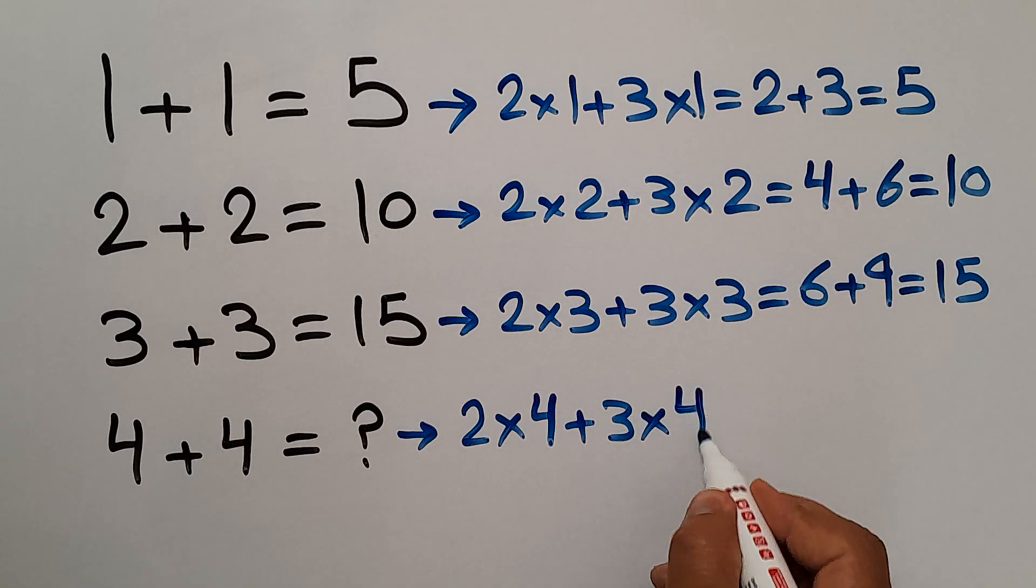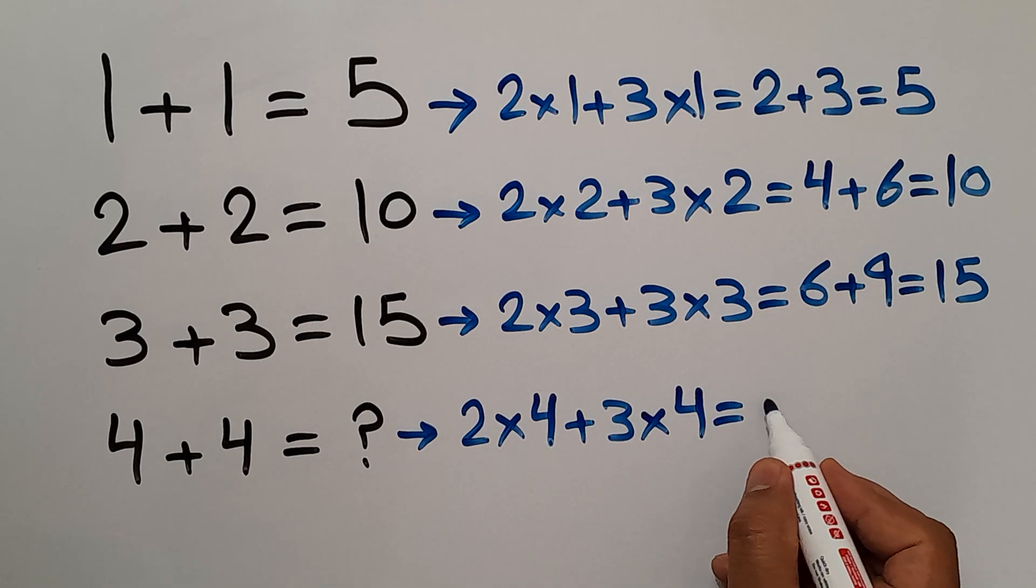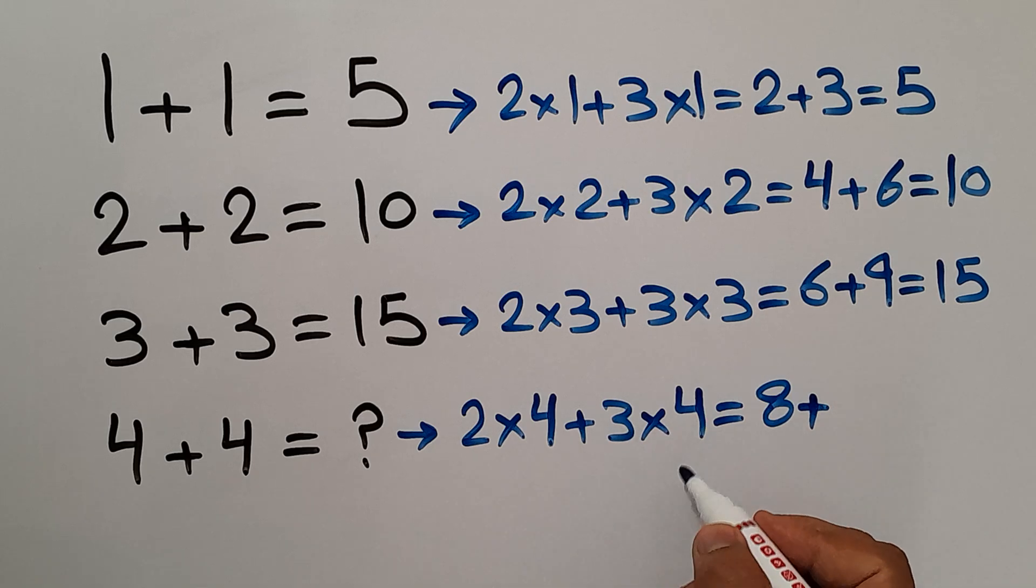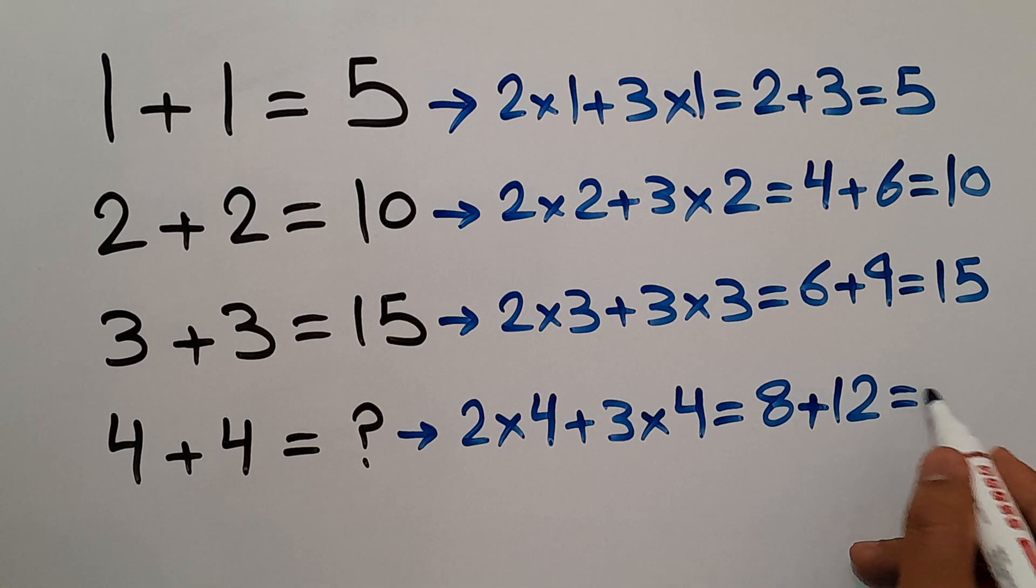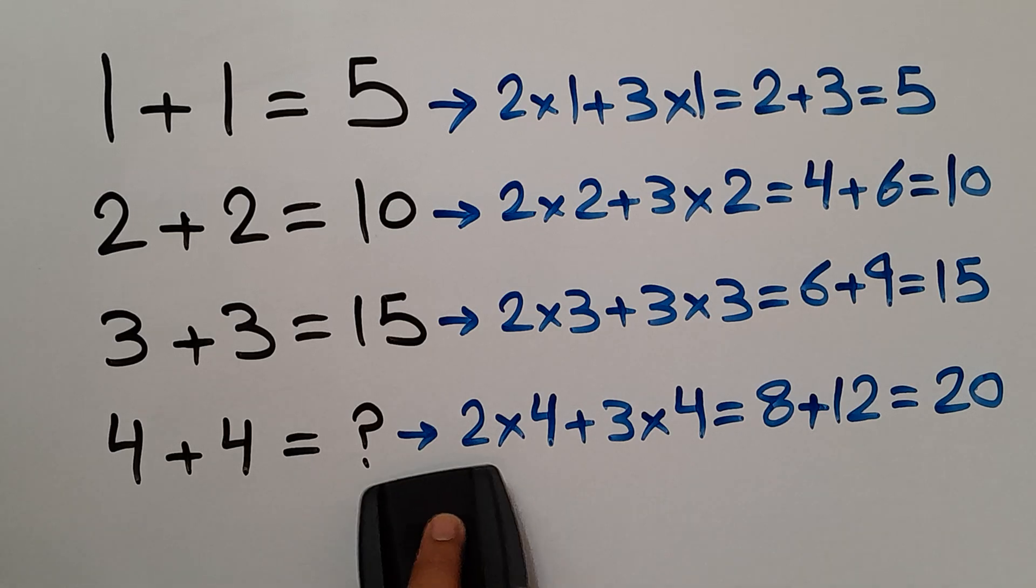So, 2 times 4 equals 8, and 3 times 4 equals 12. 8 plus 12 is equal to 20. Therefore, our final answer to this problem is 20.